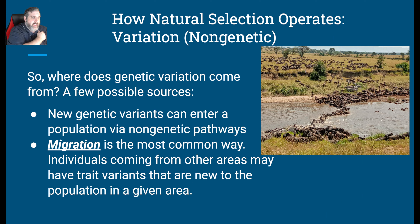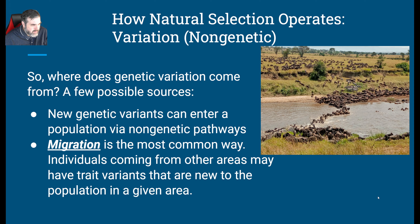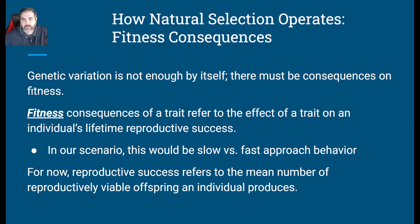Some non-genetic things that can produce variation is when new genetic variants enter into a population via non-genetic pathways. Migration is probably the biggest one — it's where individuals of the same species but from a different location come into a new area. You can see here what I think are wildebeest crossing from one land spot to another, possibly entering an area they've never been before.